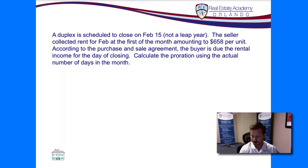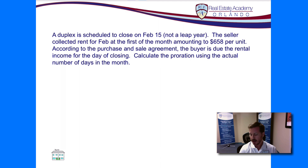We've got a question. A duplex is scheduled to close on February 15th — this is not a leap year. The seller collected rent for February at the first of the month amounting to $658 per unit. According to the purchase and sale agreement, the buyer is due the rental income for the day of closing, to calculate the proration using the actual number of days in the month.